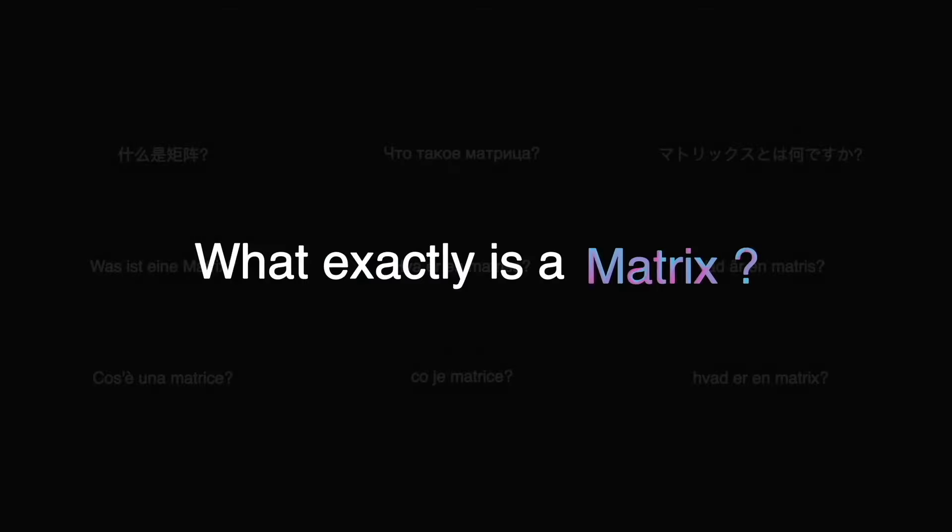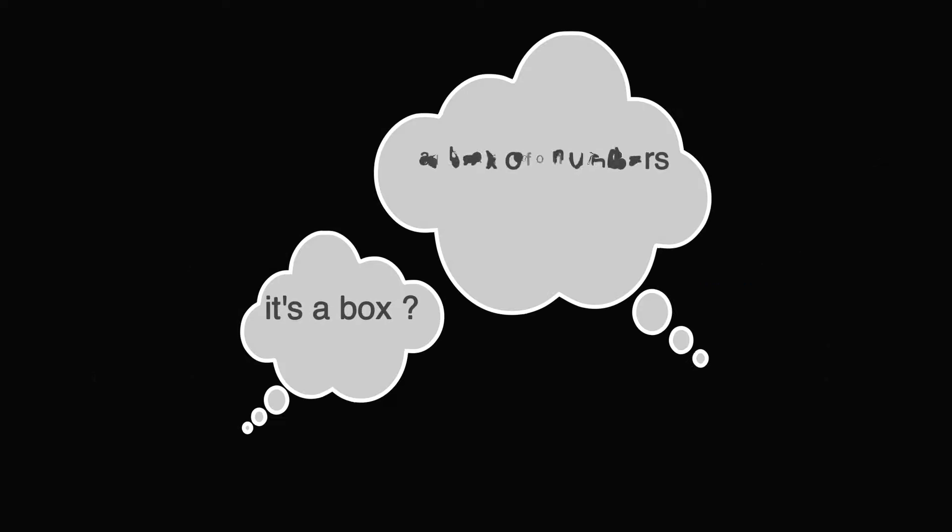What exactly is a matrix? Some say it's just a box of numbers, a collection of vectors, a mathematical object, a linear transformation, a function. Perhaps no one knows the answer, but we do know how to multiply a matrix and a vector.